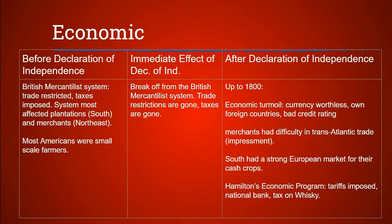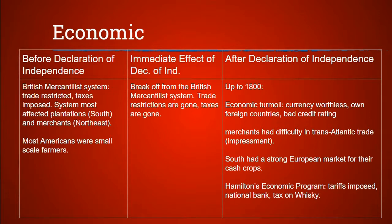The immediate effect of the Declaration of Independence was a breakaway from the British mercantilist system — the trade restrictions and taxes were gone. Looking further on, the picture is a bit more muddled. Initially, there was economic turmoil, as the American currency was worthless. The U.S. owed a lot of money to foreign countries, and the government under the Articles had a hard time raising revenue through taxes, so the country's credit rating was terrible. For merchants, times were also difficult. While they no longer had to worry about the mercantilist system, they still had a hard time transporting and trading goods with European countries.